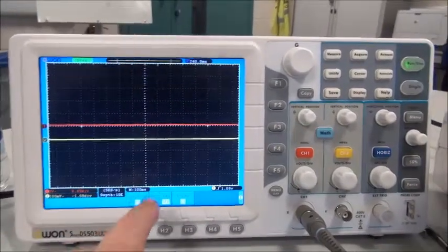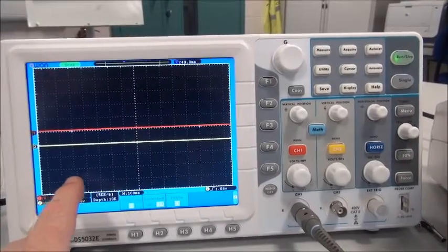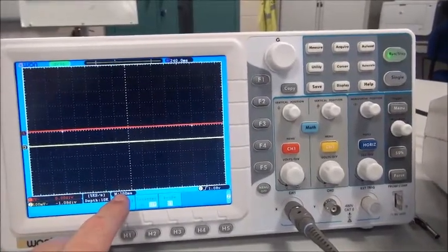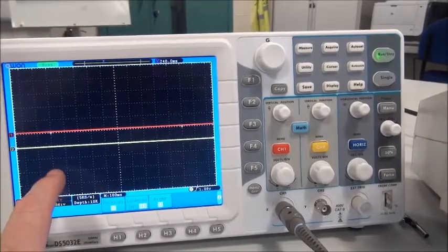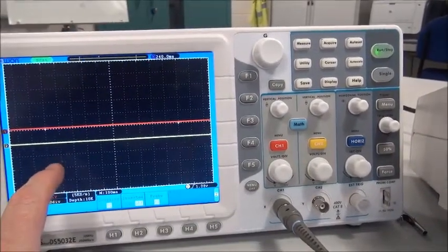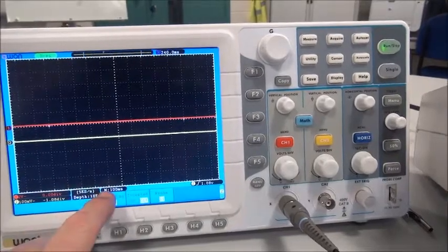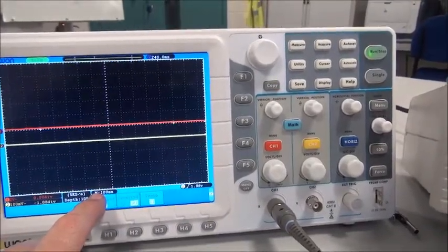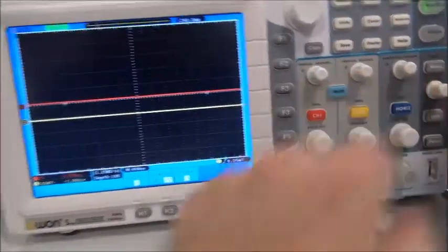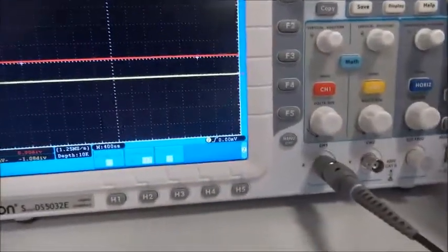The other thing we have to be aware of is the time elapsed per square. Now, at the moment, that's on 100 milliseconds. To get a sine wave to repeat for one square, this would need to be on 1 millisecond. But I'm going to set it to 500 microseconds, or 400 microseconds. There.